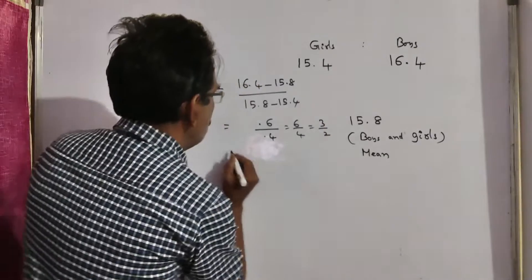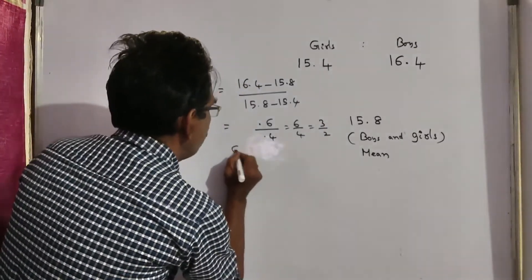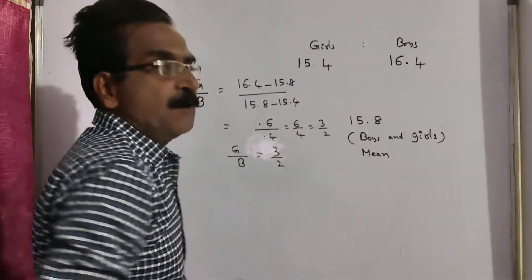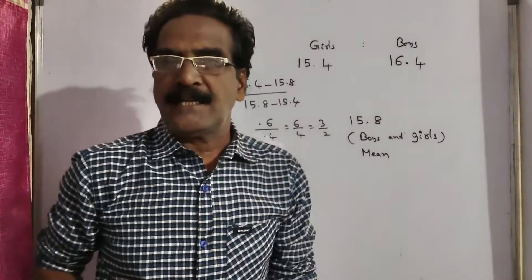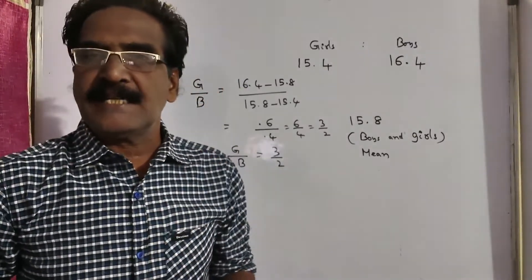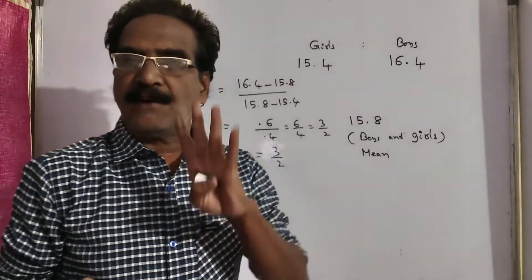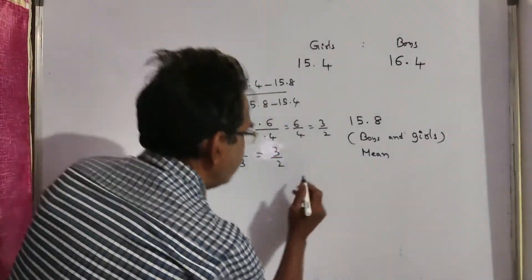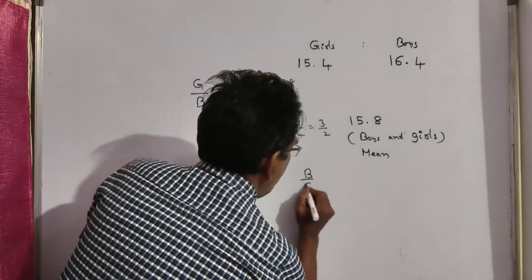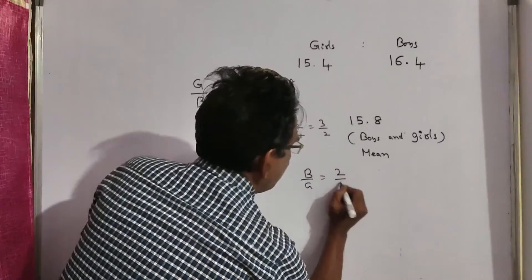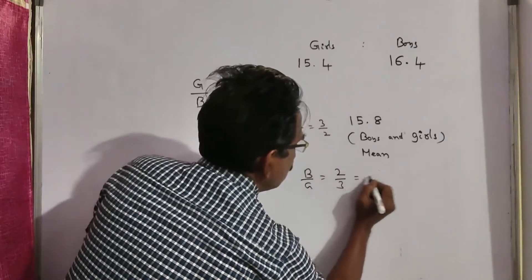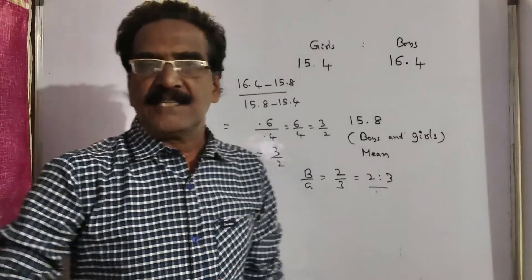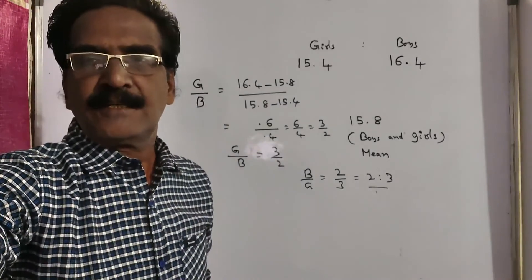That is equal to 3 by 2. So this is the ratio of girls to boys — 3 is to 2. But the question asks for the ratio of boys to girls, so the ratio of boys to girls is equal to 2 is to 3. That is your answer, friends. Okay friends, thank you. Have a nice day.